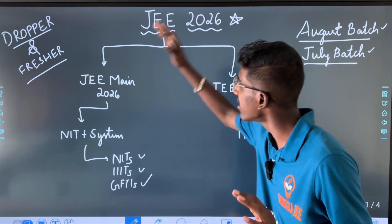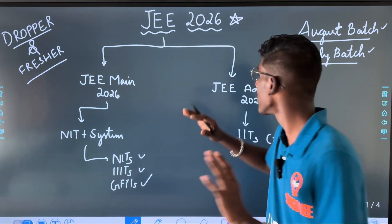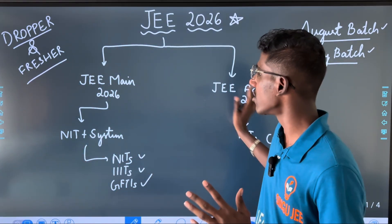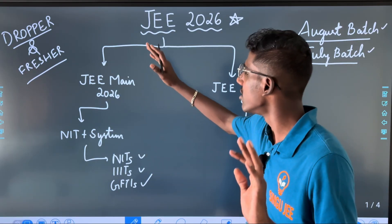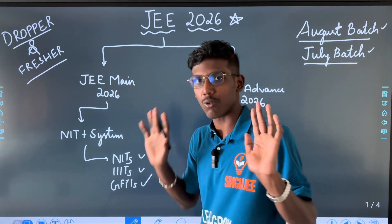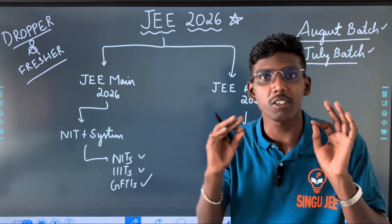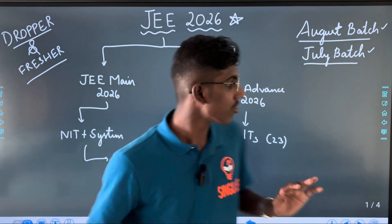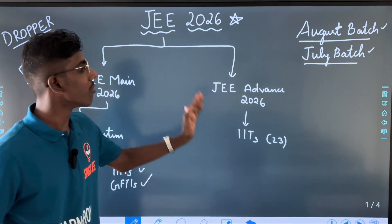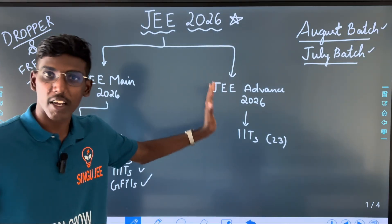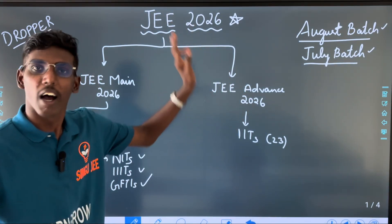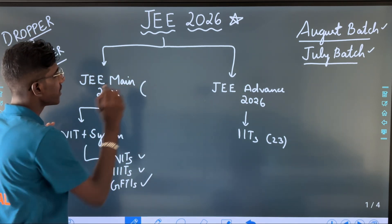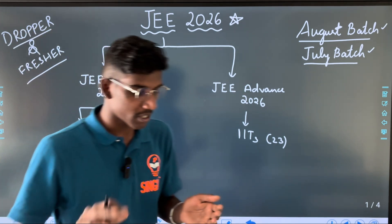JE Main 26 — that means JE Advanced 26. So JE Main 26 is the JE Advanced 26. What do you want to do? What are the ways applicable? NIT Plus System, NIT stipulates, JFTS — it's the best. If you want to get IITs, if you want to get JE Advanced 27, you can choose JE Advanced 27. So just go to IITs. We can go to JE Main 27.